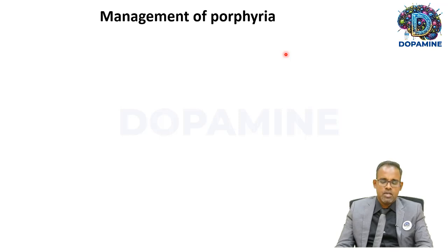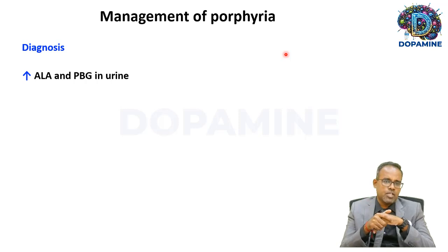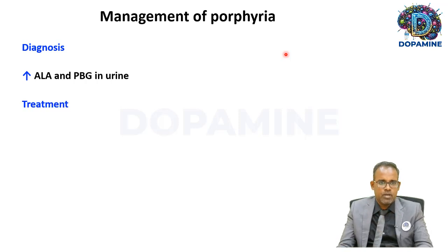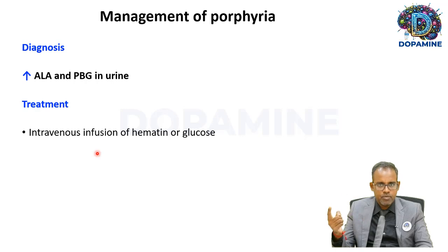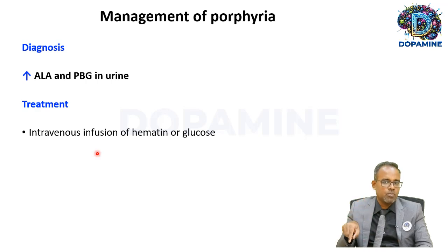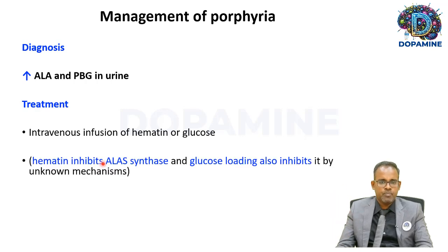Management depends on diagnosis. In acute intermittent porphyria, a urine sample is checked for elevated ALA and PBG. Treatment involves intravenous infusion of hematin, which replenishes heme and inhibits ALA synthase, plus intravenous glucose, which also inhibits ALA synthase by unknown mechanisms. These are the major treatment options for acute porphyria.